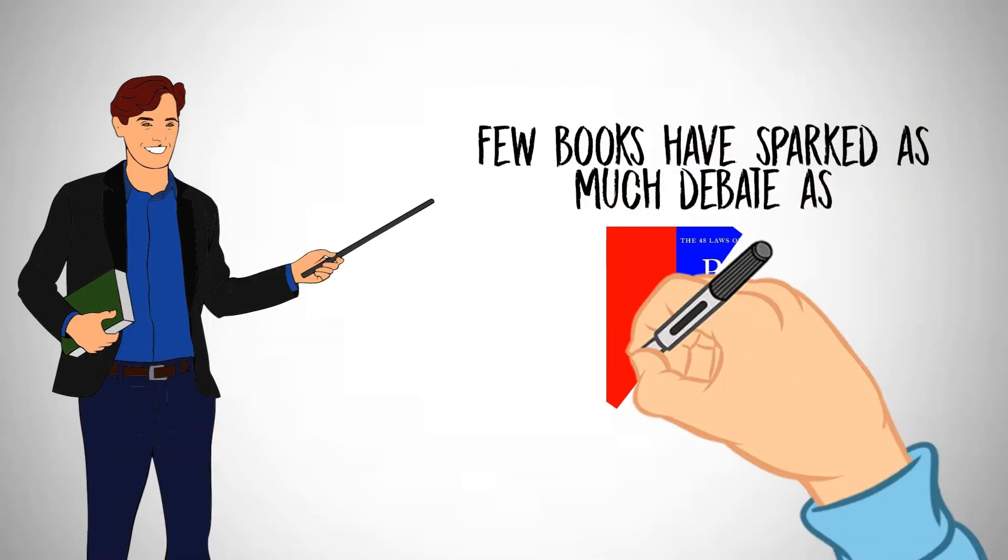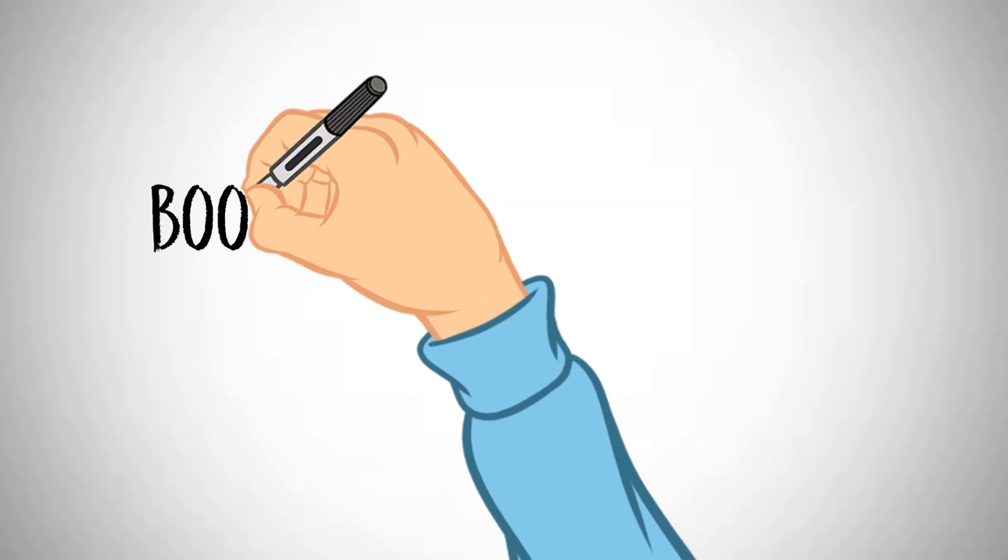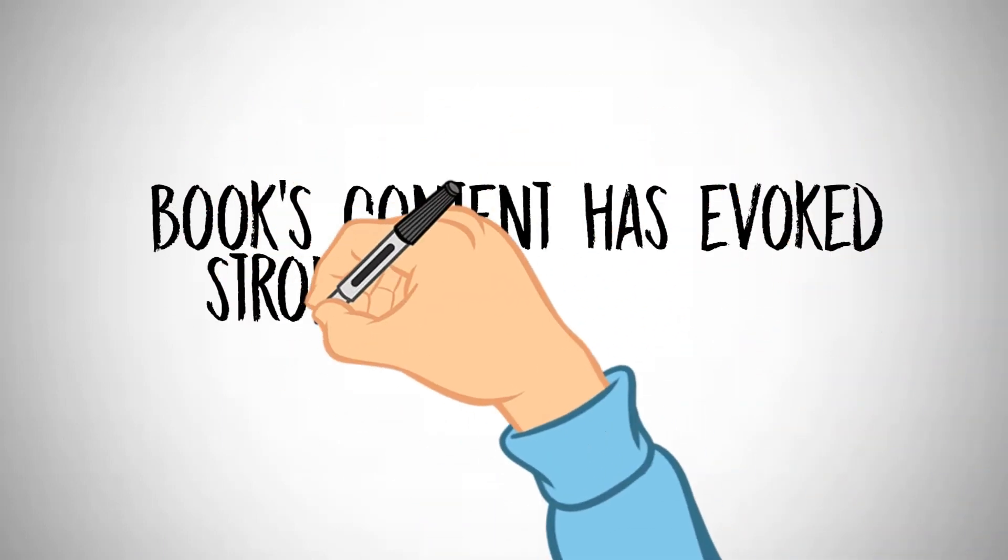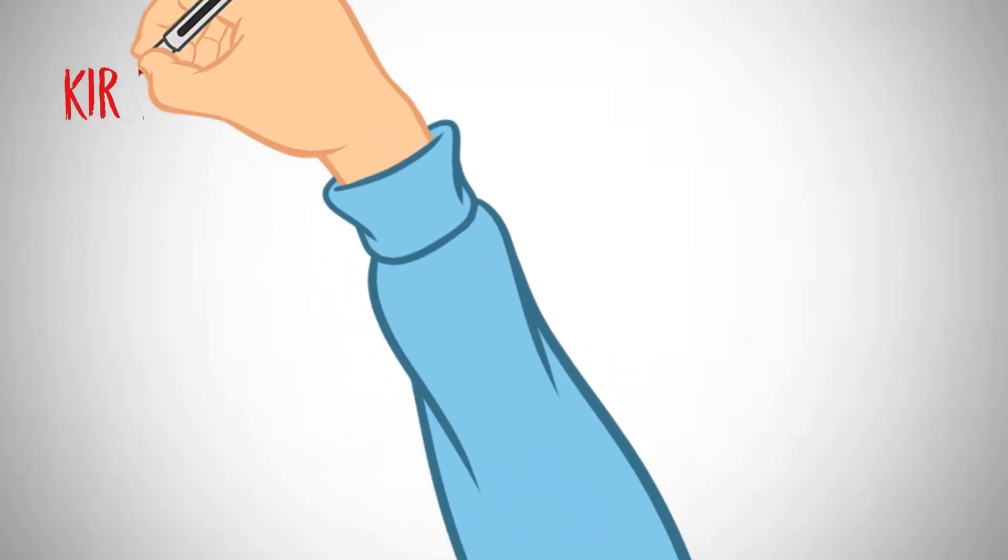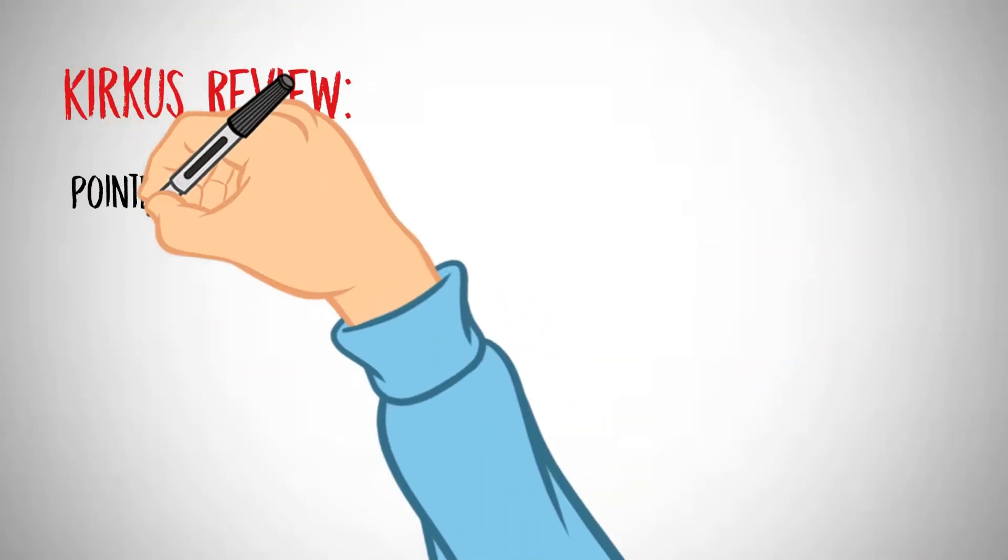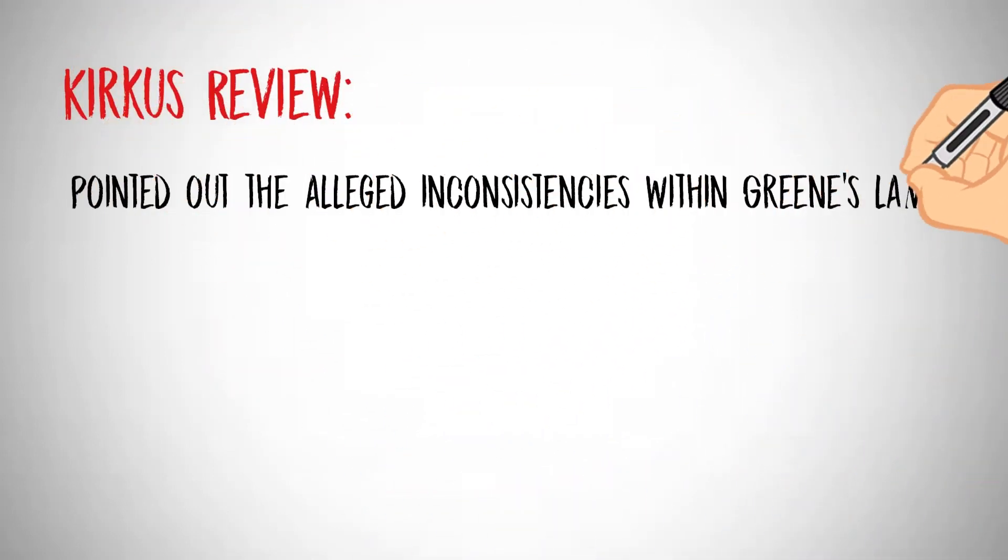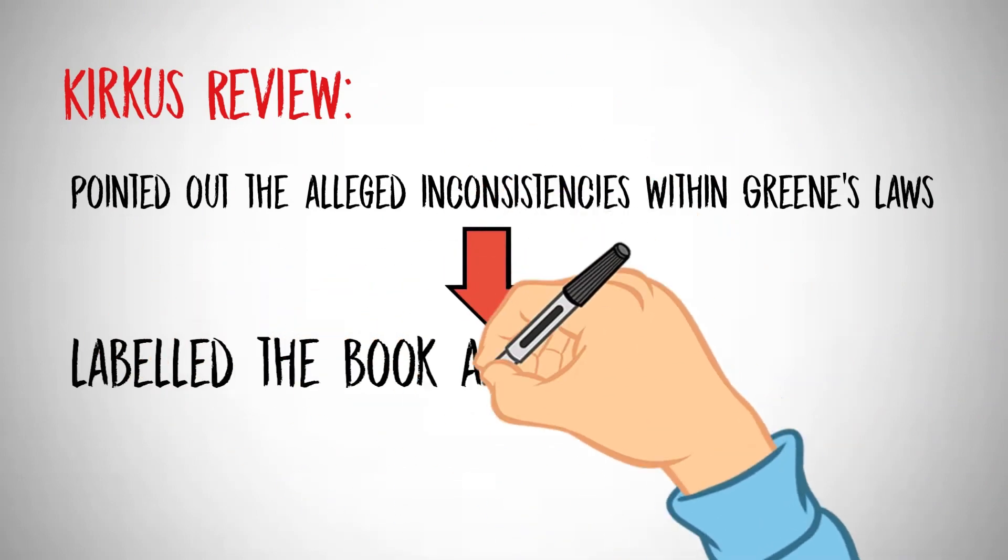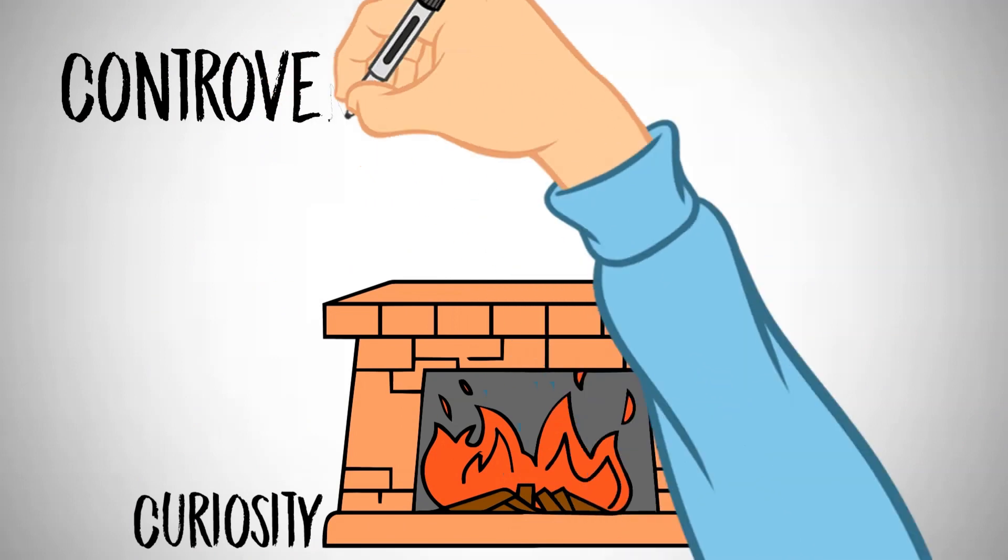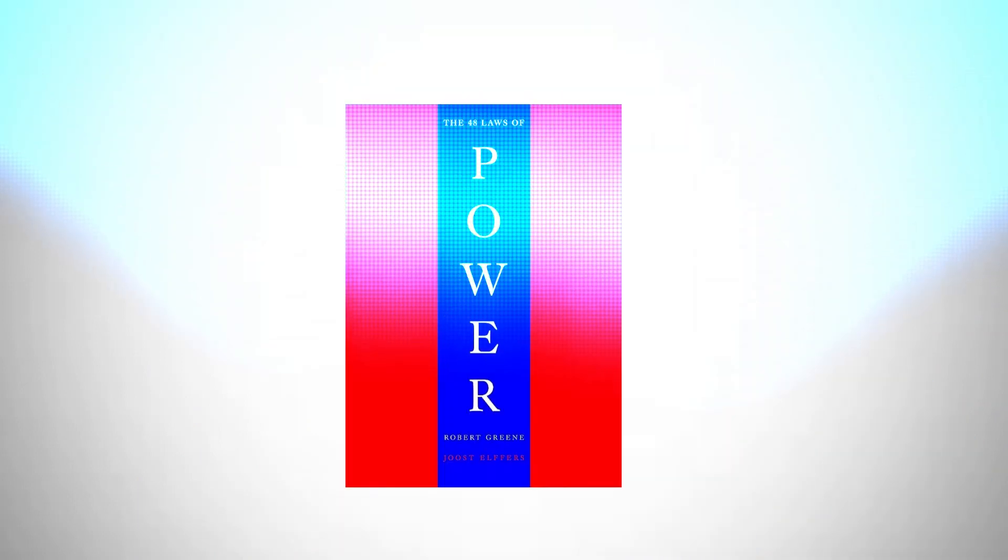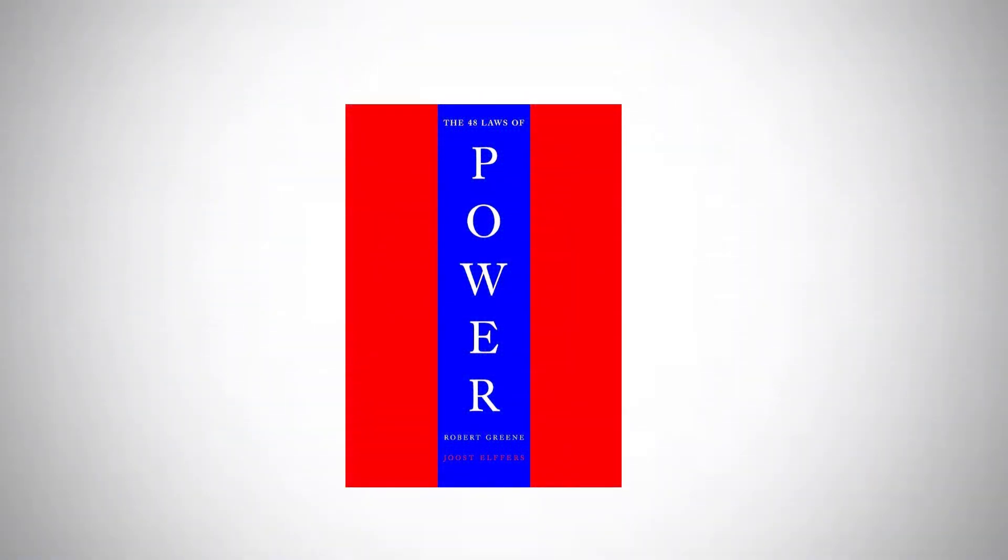In the world of literature, few books have sparked as much debate as The 48 Laws of Power by Robert Greene. As we've explored in this video, the book's content has evoked strong reactions from critics and supporters alike. Kirkus Review, for example, boldly pointed out the alleged inconsistencies within Greene's laws and labeled the book as utterly nonsensical. However, controversy often fuels curiosity, and despite the polarizing opinions, The 48 Laws of Power continues to maintain its popularity.